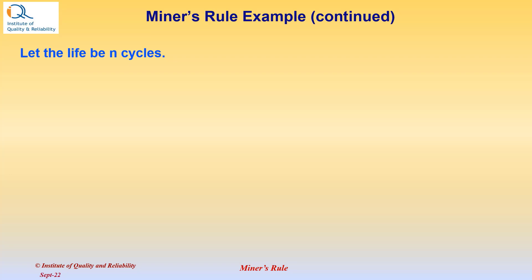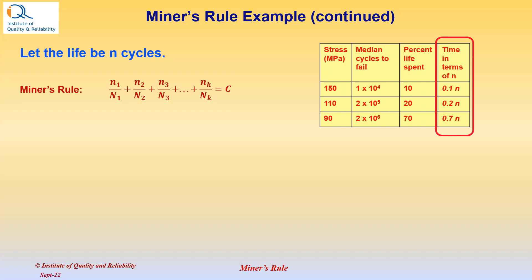Now let us assume that the life is n number of cycles. We have already seen the equation of Miner's rule before. This is reproduced for reference here. In the table, I have added time in terms of n. So at 150 MPa, it spends 0.1n or 10% of the life.